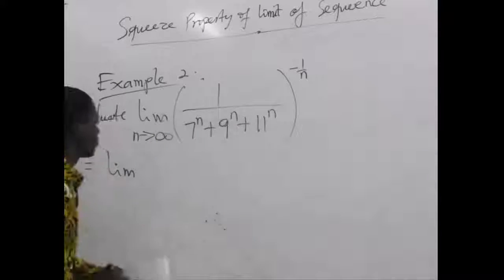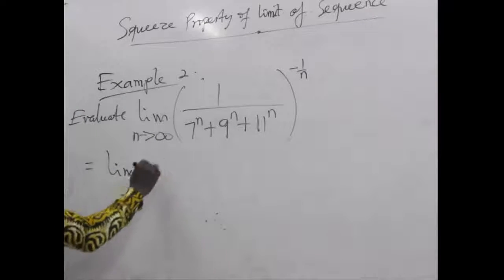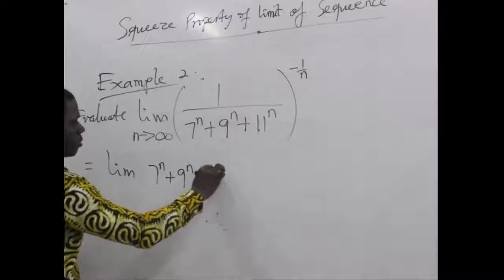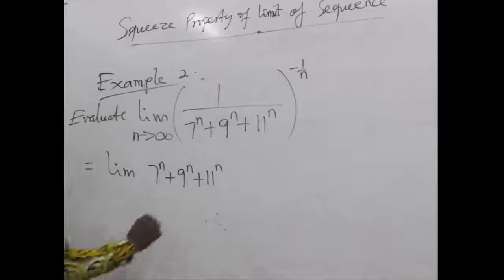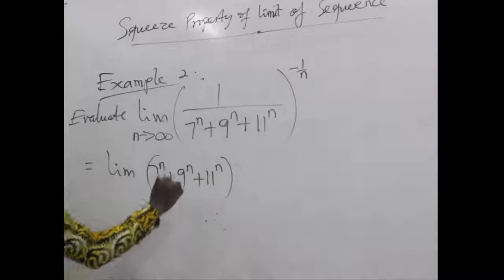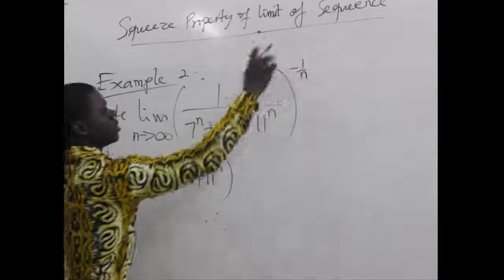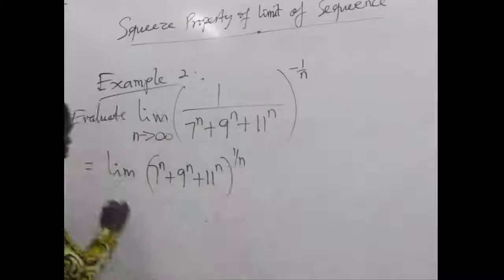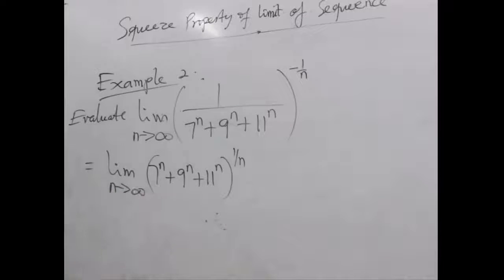So we have the limit as n approaches infinity of (7^n + 9^n + 11^n) raised to the power 1/n. As we reciprocate then the negative sign moves. So now it looks more familiar. It looks simpler.